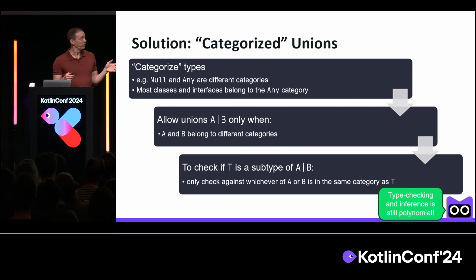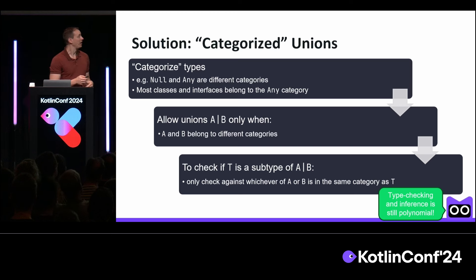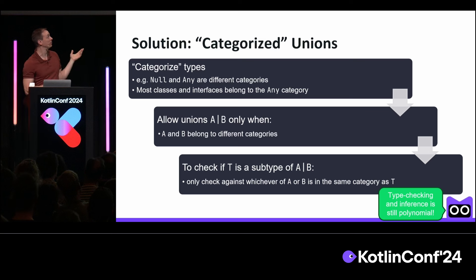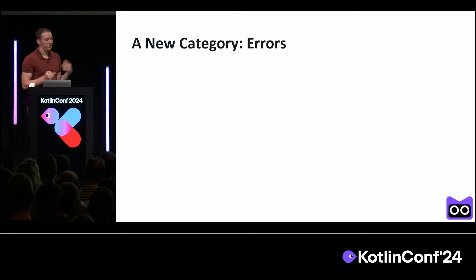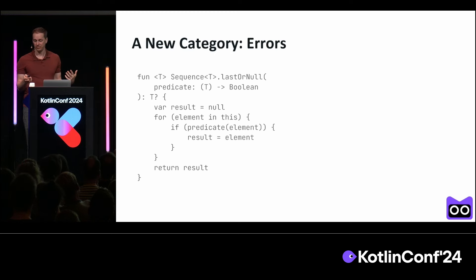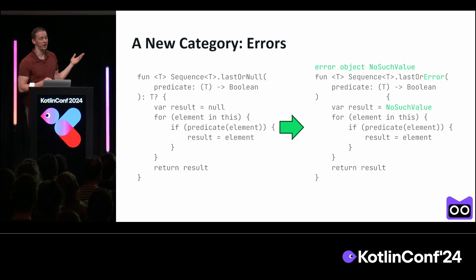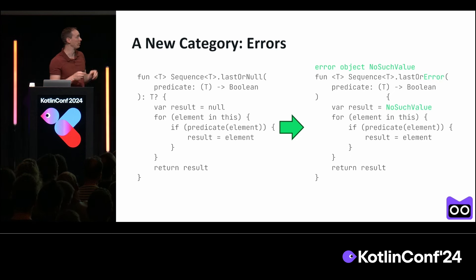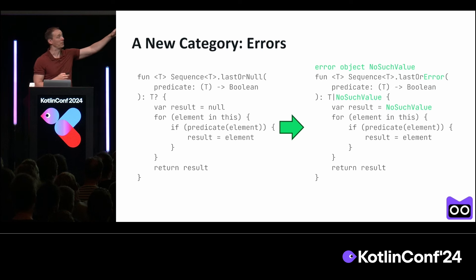We've already found there are some corner cases with nullable types and inference that this new algorithm addresses. But we don't want to just improve the existing algorithm — we also want to add new features. One thing we can do is add a new category for error values. These will be things that are like null but more customized — user-defined custom errors. With this new category, we can union it together with a bunch of other types we already have. So we'll take our lastOrNull program and say the problem before was that we're reusing null that everyone else is already using. I'm going to introduce my own custom error object called NoSuchValue. Rewriting this program to use NoSuchValue instead of null, the return type becomes T union NoSuchValue. This gives a program we can type check reliably, and the caller can distinguish between null in the list and NoSuchValue the error.